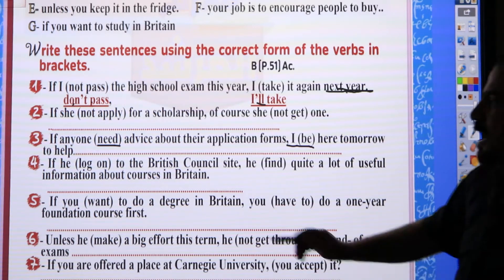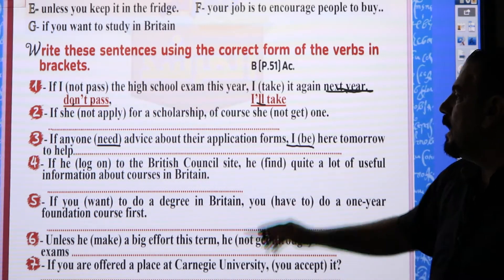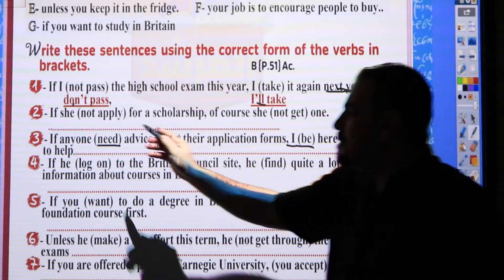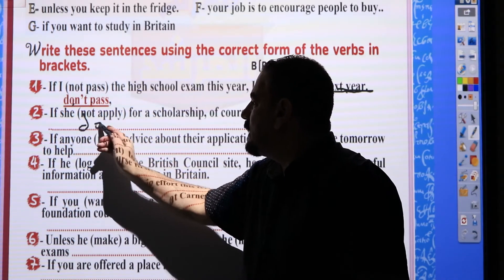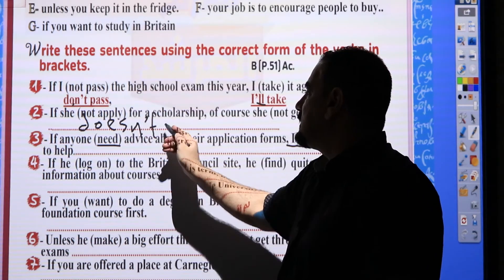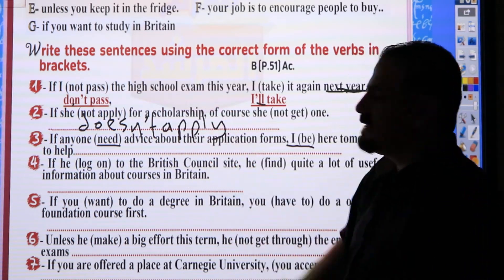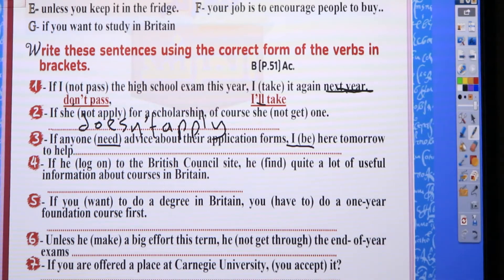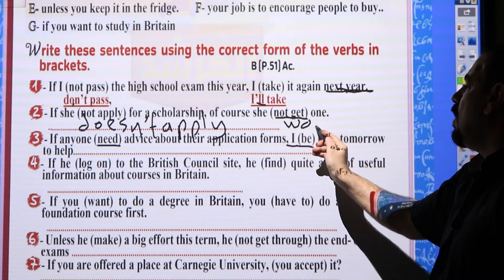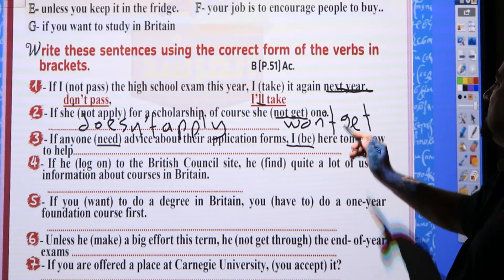Number two: 'If she doesn't apply for a scholarship, of course she won't get one.' Because the subject is 'she', the verb becomes 'doesn't apply', and the result clause becomes 'won't get' — solving in first conditional.